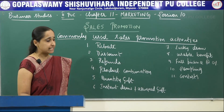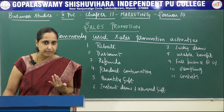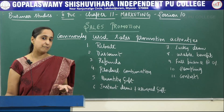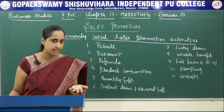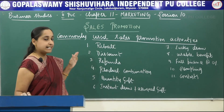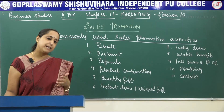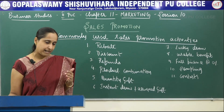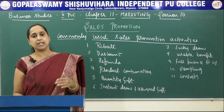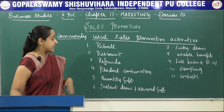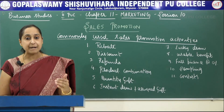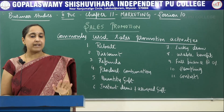Now let us see the commonly used sales promotion activities. There are 11 commonly used sales promotional activities. The first one is rebate — rebate means offering a product at a lesser price. For example, a car manufacturing company may offer a 10,000 rupee discount for a limited period. Next is discount — offering products at a lesser price, for example a shoe company offering 40 or 50 percent discount.